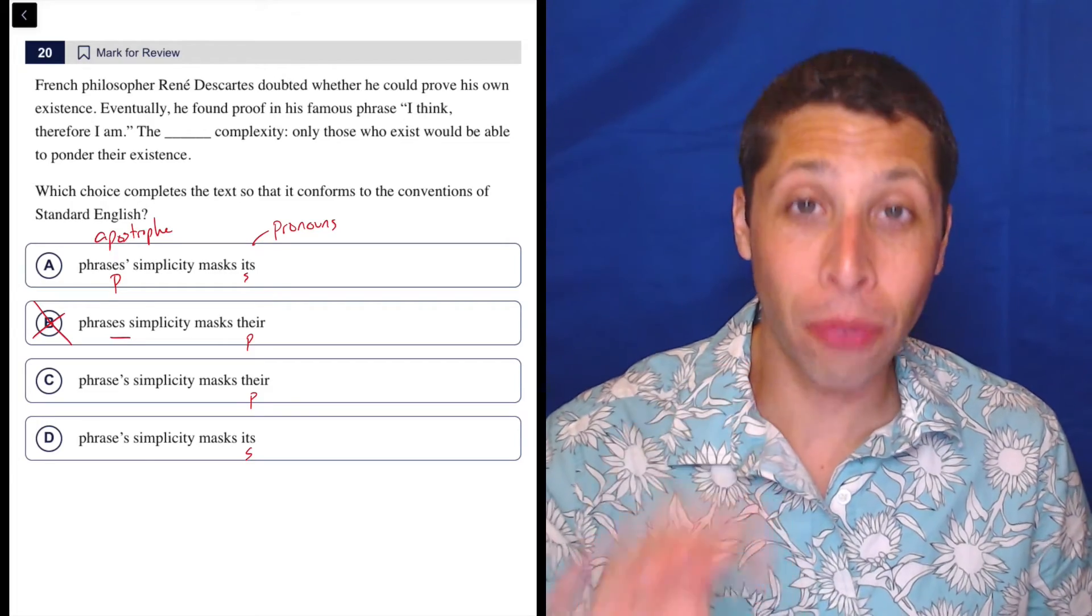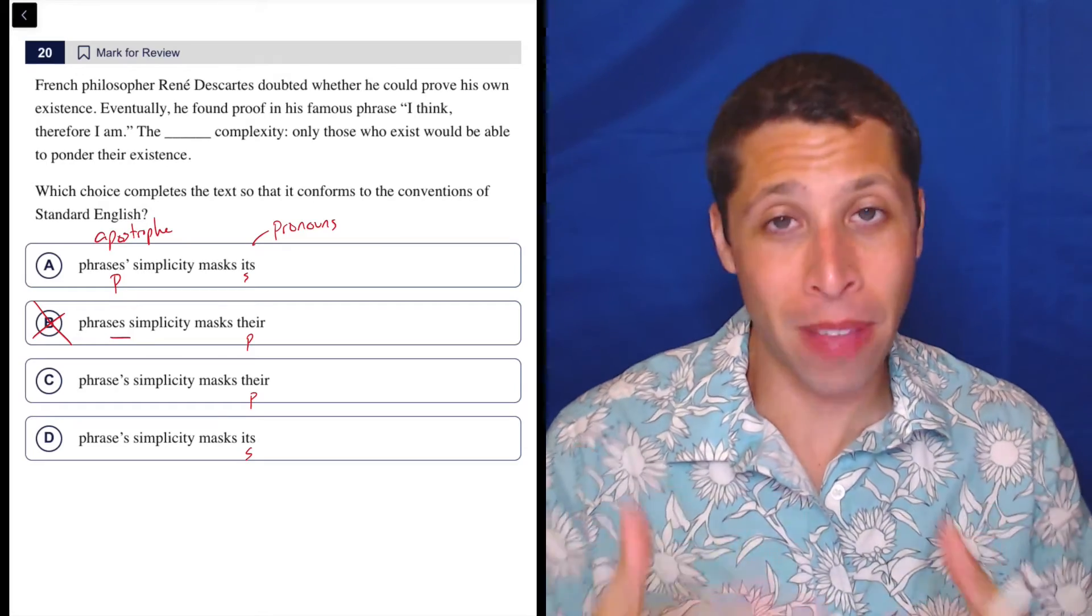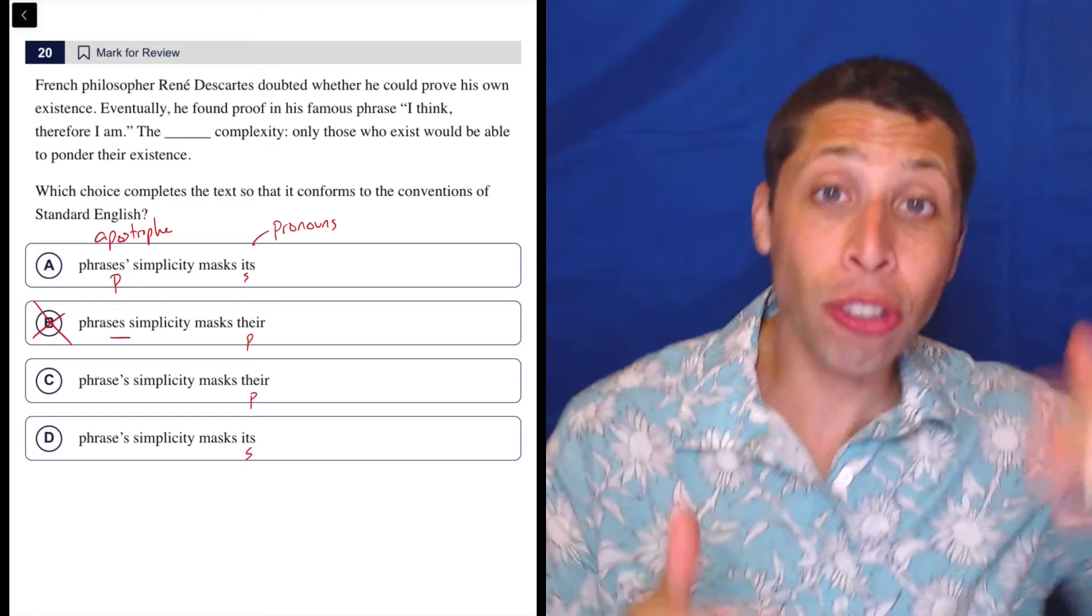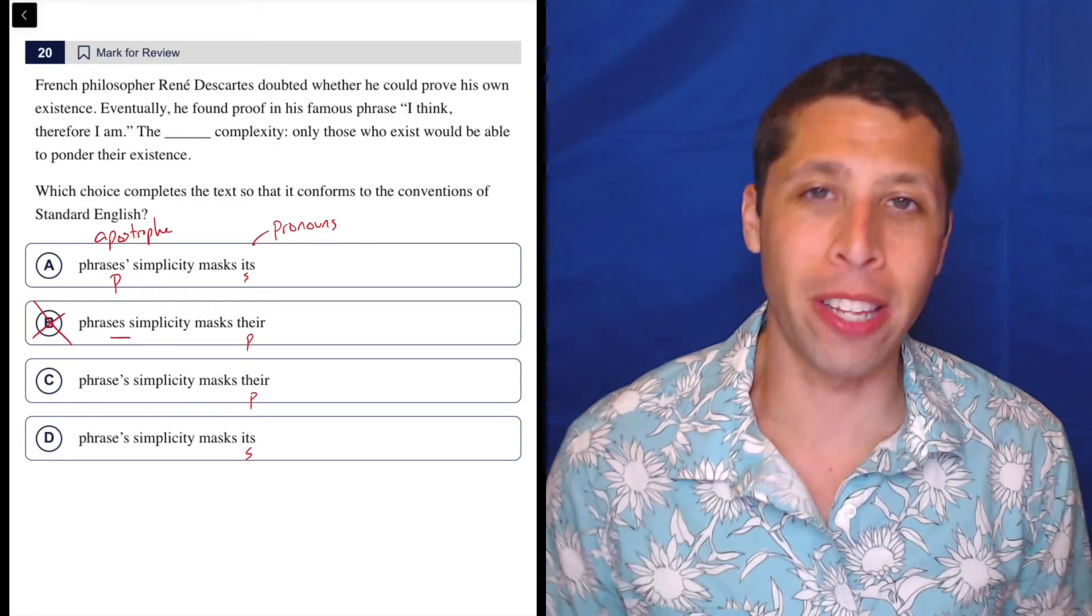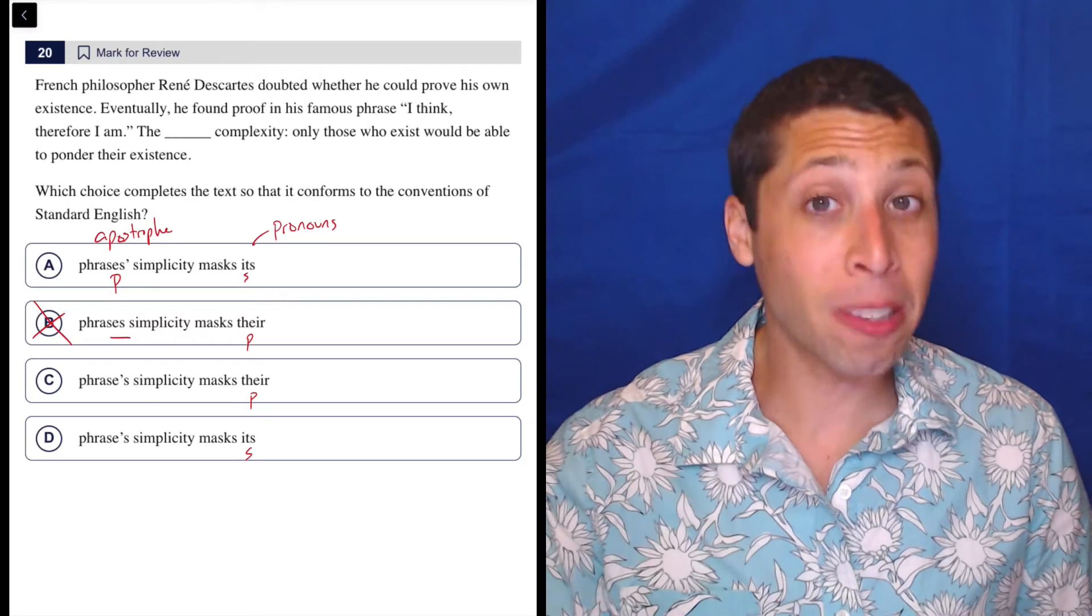Basically, it's like the word phrases already existed and then we wanted to make that word possessive. So we put an apostrophe at the end. No extra S is necessary because one is already there to kind of make the sound that apostrophes make. That's plural.